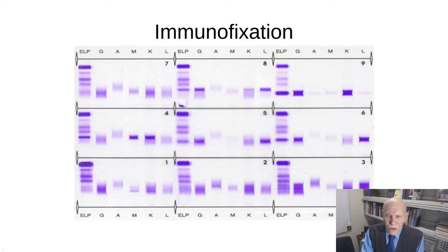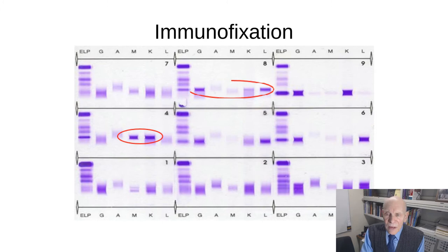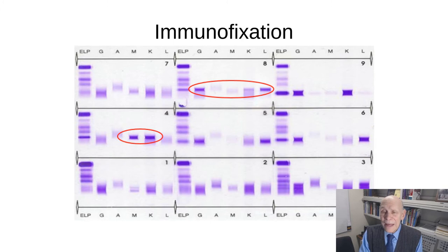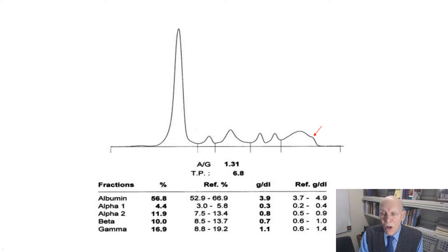Immunofixation is a familiar process: re-perform the electrophoresis and where you see a band, react the serum with IgG, IgA, IgM, kappa, and lambda antibodies. Case number four shows an IgM kappa monoclonal protein. Sometimes it's trickier — case number eight shows a strong IgG lambda but also a weak band in the kappa region: is that an IgG kappa hidden under the G peak, or free kappa, or IgD kappa, or even the rare IgE kappa? Additional work is needed in such cases.